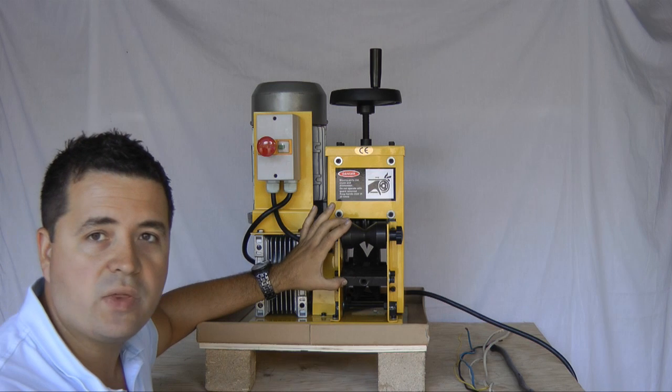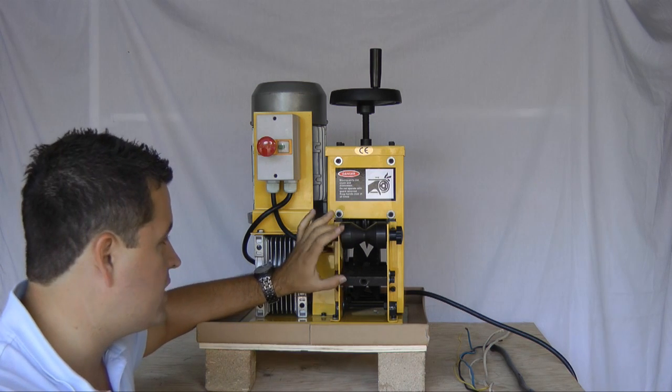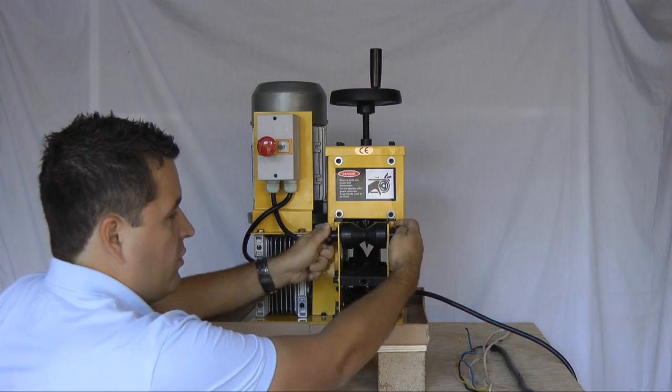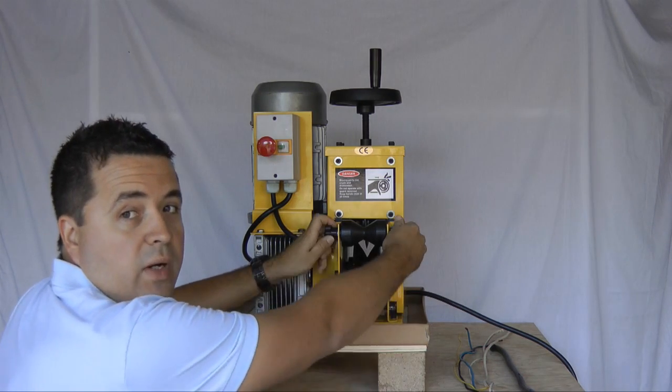Over here is where you feed the wire in. Now there's two openings to feed the wire in. You've got a smaller opening here for your lighter gauge and you've got a larger opening here for any kind of cable you might be running through the machine.